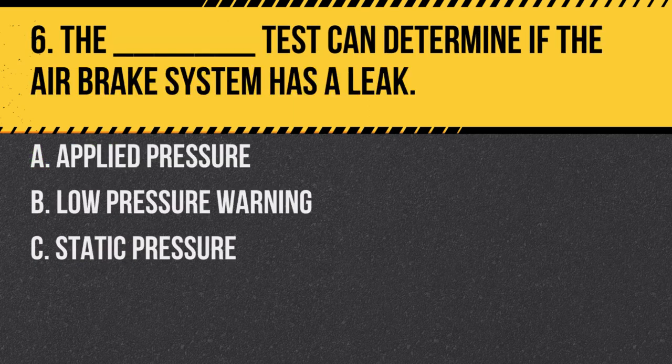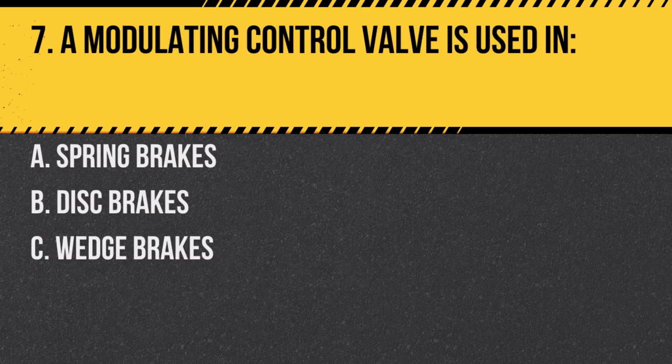Question 6. The blank test can determine if the air brake system has a leak: A. Applied pressure. B. Low pressure warning. C. Static pressure. Answer C. Static pressure. The static pressure test checks for air leaks by noting pressure drops.